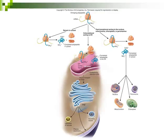The second pathway a protein can follow is co-translational sorting, shown going straight down the middle of this image. This is the type of sorting we talked about when we looked at the endoplasmic reticulum and the Golgi apparatus, and we'll go through it again in a minute.